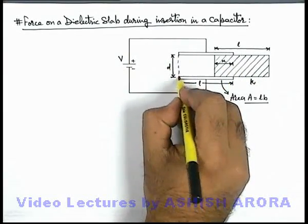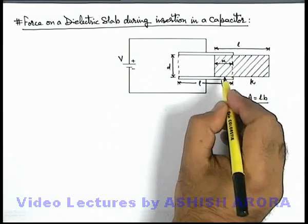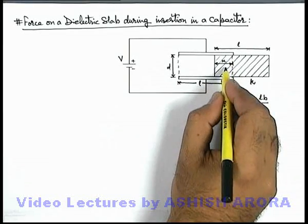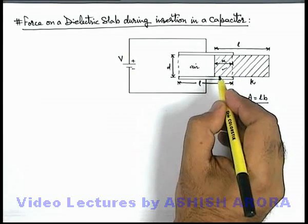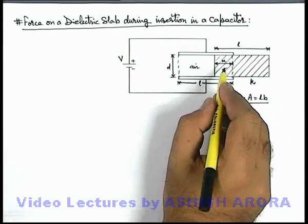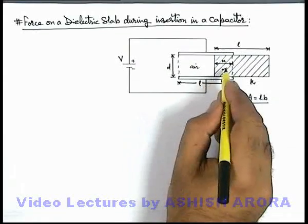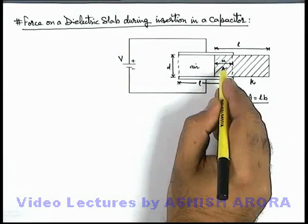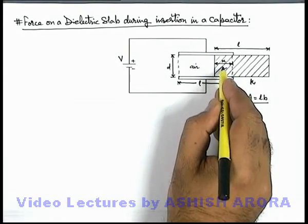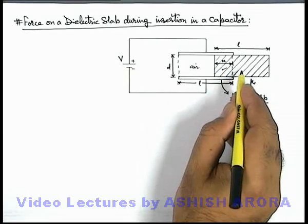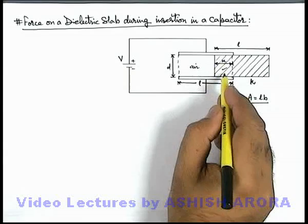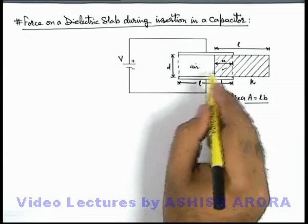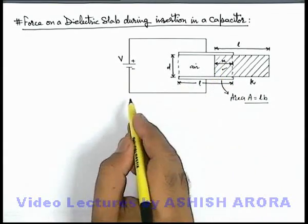In this situation we can consider the capacitor to be composed of two capacitors in parallel. One is this air capacitor and the other is this dielectric capacitor. We can see that the plates are common for both, so these two can be considered in parallel combination, like in the previous section we have discussed about insertion of dielectric slab between the plates perpendicular to the plates.